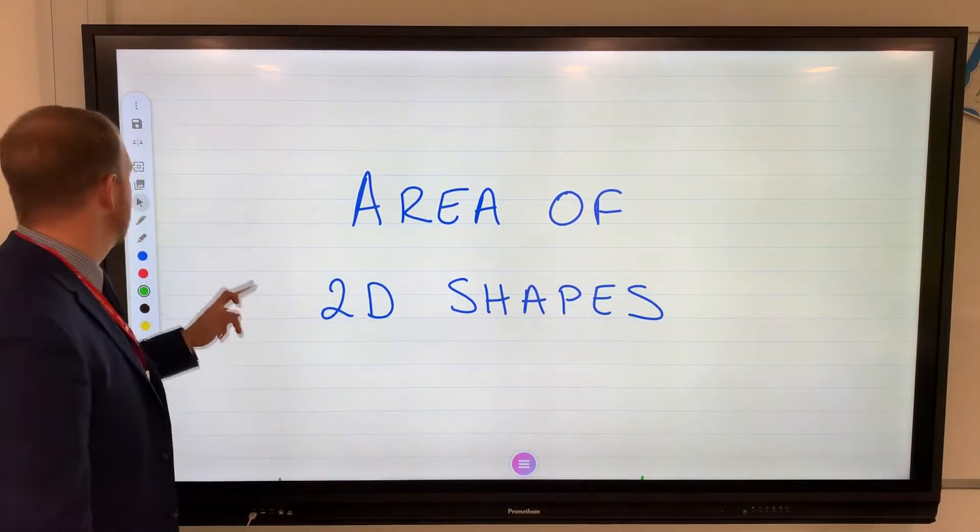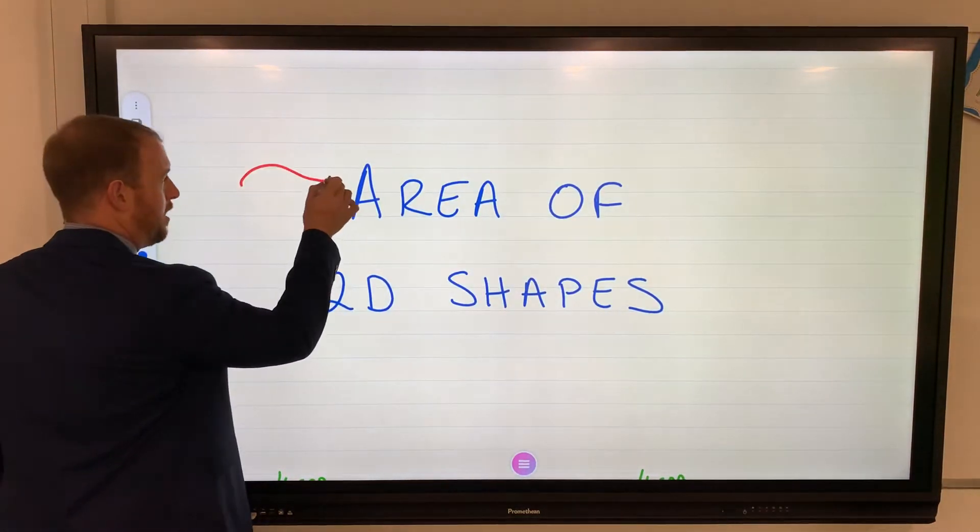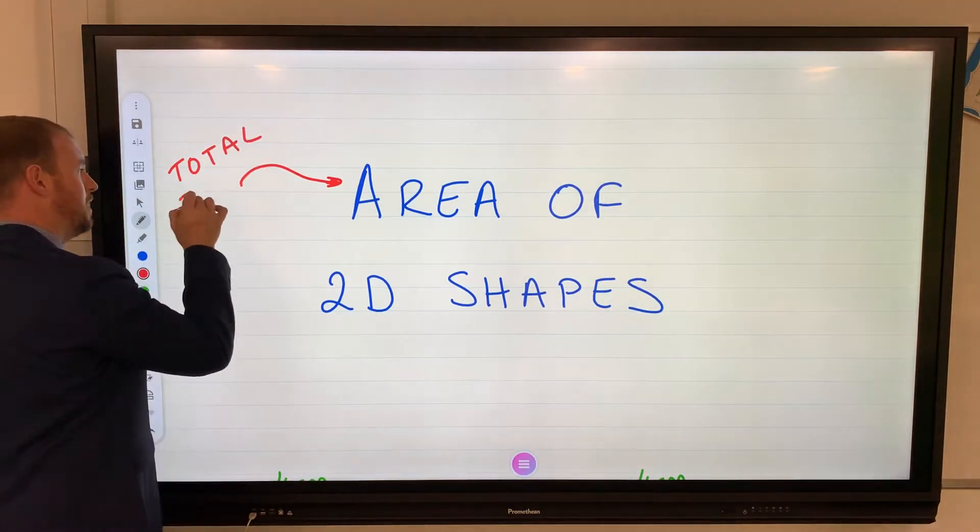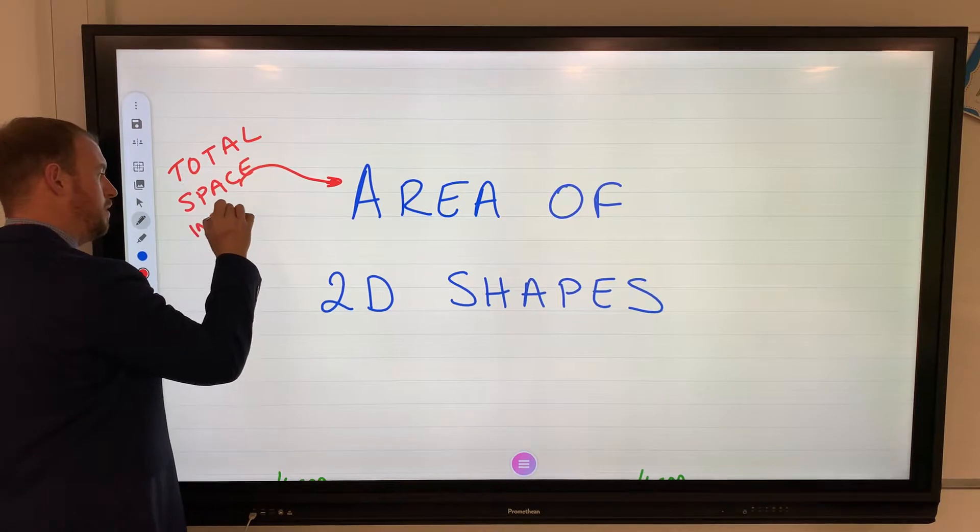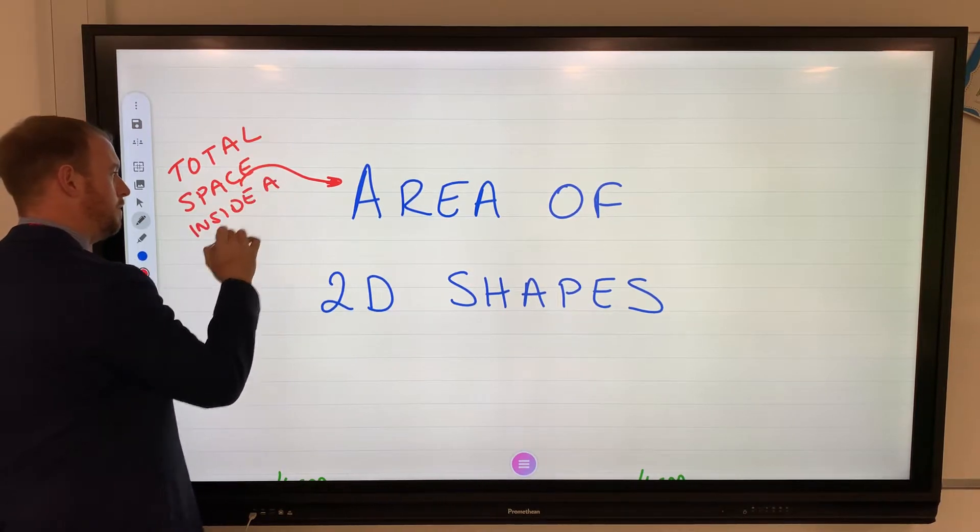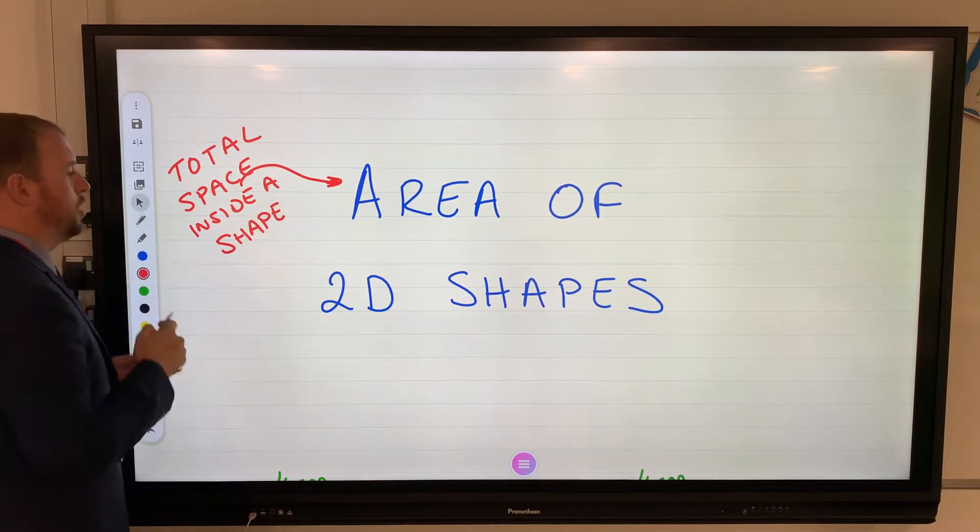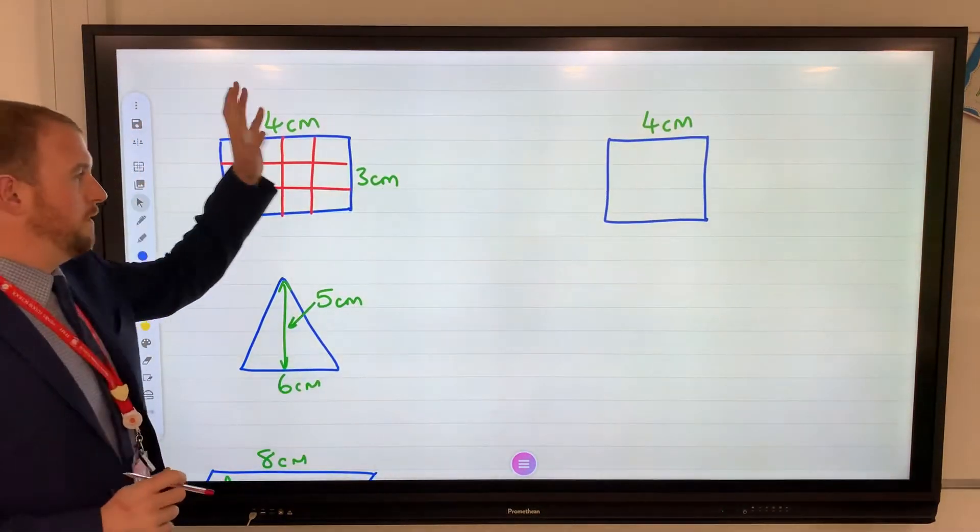Today we are looking at calculating the area of 2D shapes. The area is the total space inside a shape - that's your key note: area equals total space inside a shape. I've got some various shapes here.